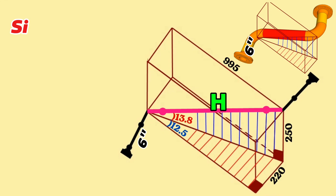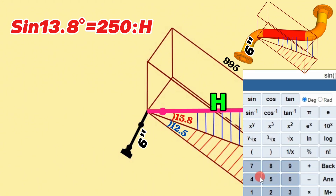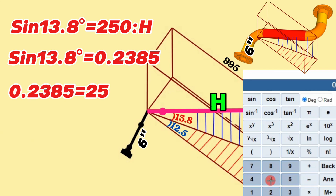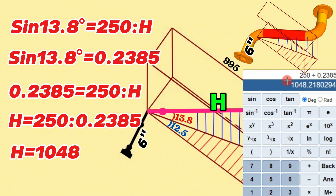According to the trigonometric function, sin 13.8 degrees equals 250 divided by H. We find that sin 13.8 degrees equals 0.2385 using a scientific or phone calculator. Substituting that value into the equation, 0.2385 equals 250 divided by H, so H equals 250 divided by 0.2385. Using the calculator we find that H equals 1048 millimeters.